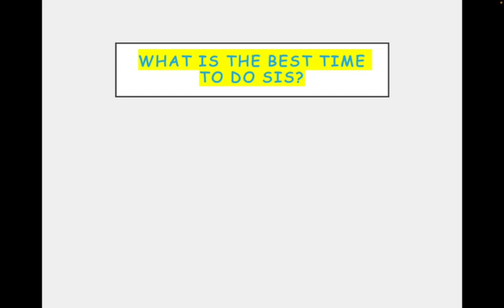How is it usually done? Different people do it in different ways. Some people take a number 8 Foley's catheter, introduce it into the endometrial cavity, fill the balloon with 1-2 cc of saline, and apply traction at the internal os. The balloon is kept at the internal os, and then around 10 ml of saline is infused inside.